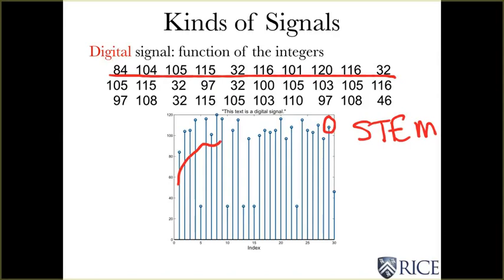So this indicates that this function only exists at the integers. The value at 29.5 doesn't exist. It's not even defined. This is a function only of integers. That's what a digital signal is.